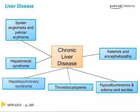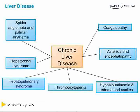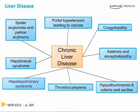The liver clears different toxins, so you get asterixis and encephalopathy from the buildup of GABA. The liver also produces clotting factors, so without them you become coagulopathic. Chronic liver disease leads to portal hypertension, which can lead to varices in the esophagus, stomach, and rectum. Combine varices with coagulopathy and you have a recipe for disaster.